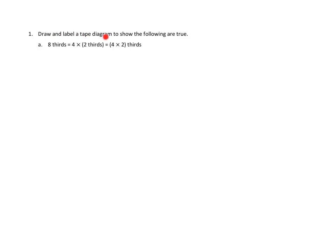Problem number one on tonight's homework asks us to draw and label a tape diagram to show the following are true: 8 thirds equals 4 times 2 thirds equals 4 times 2 thirds. Let's figure this one out. First we need to draw a tape diagram of 8 thirds.